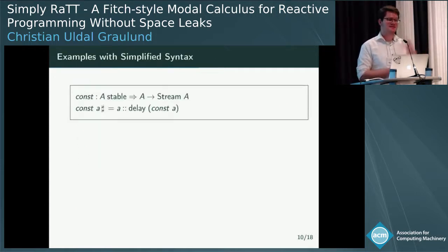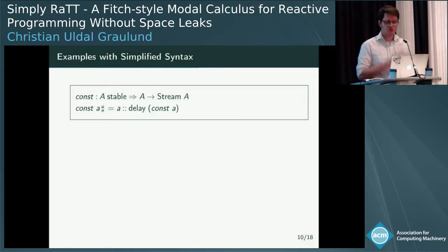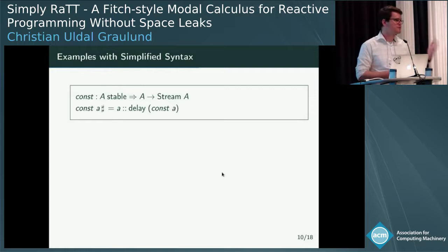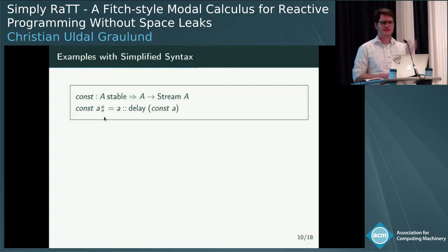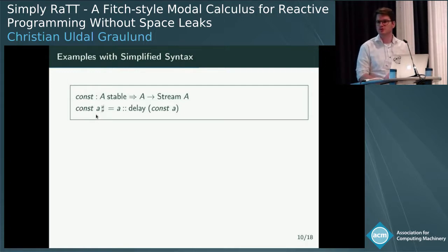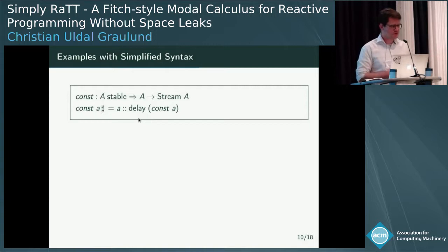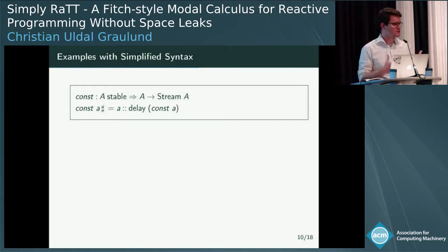Let's look at the language. One simple thing you can do is create a constant stream over some element. To do that, you need to reuse the element again and again at each time step, so it has to be stable. Given a stable type and an element of that type, you produce a stream of just that value repeated. The hash separates stable from dynamic things: whatever comes before the hash is stable, so it can be pushed into the future. You provide the first element, then recurse in the future using the delay construction — and this is safe because A is stable.